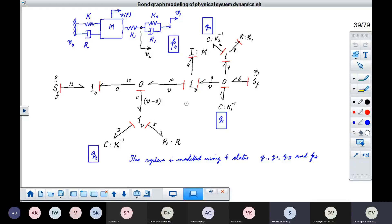So there are two C elements, three C elements, and one I element.